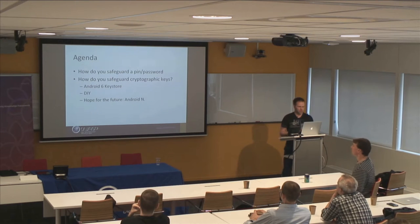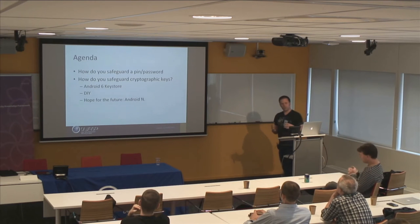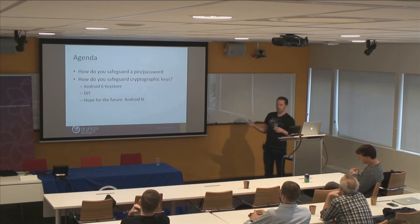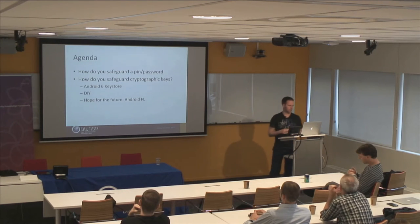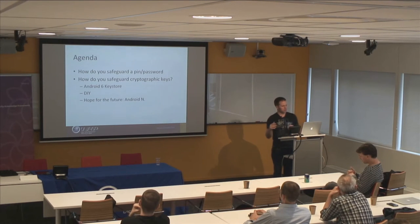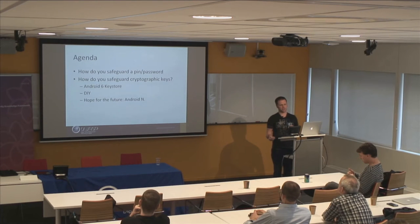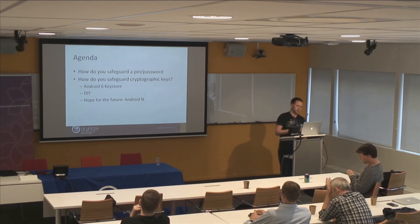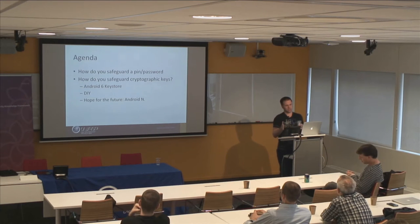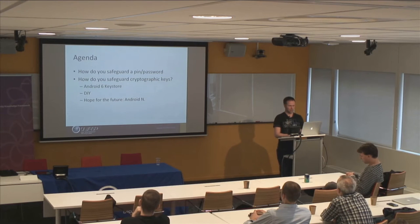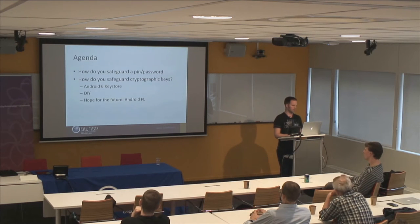I set out and created the following talk. I wanted to talk first about authentication information — how do you safeguard a PIN or a password, how do you handle that securely? Then I wanted to talk about how to safeguard cryptographic keys, because hopefully if you have a secret, the actual secret will be the key with which you encrypted that secret. And I wanted to talk about the Android 6 Keystore — how awesome it is, although there are some risks regarding that — and how to do it yourself if you're not on Android 6.